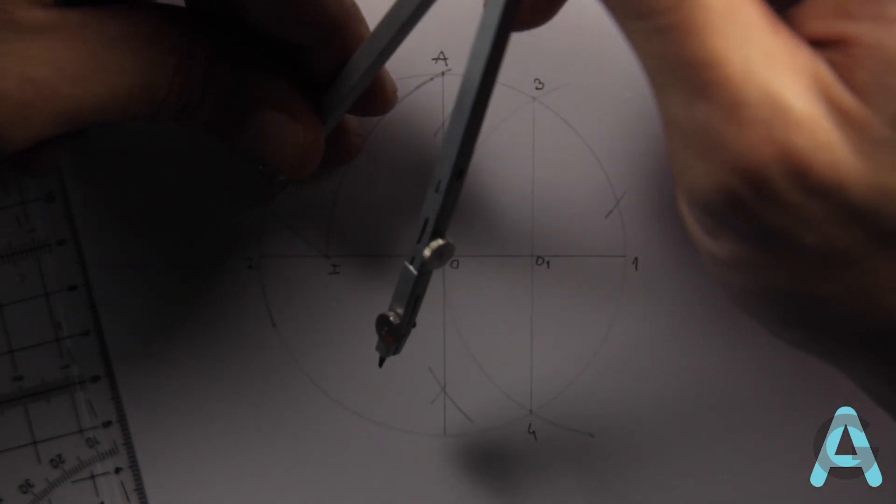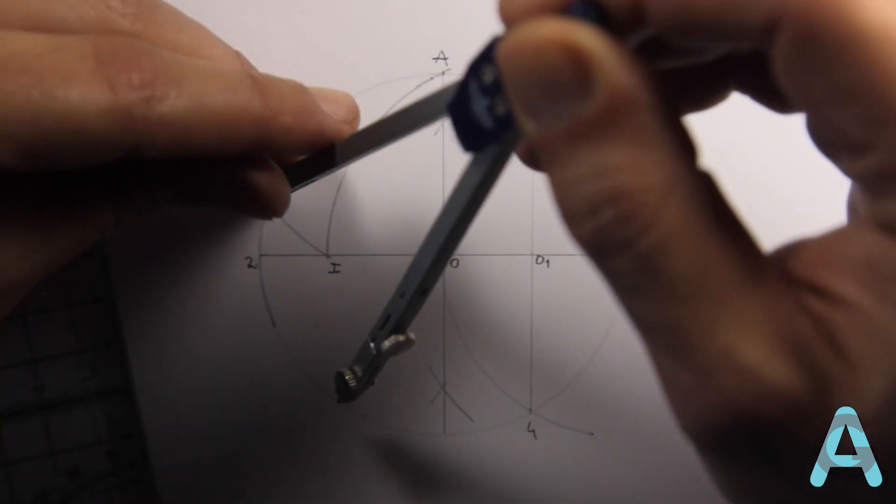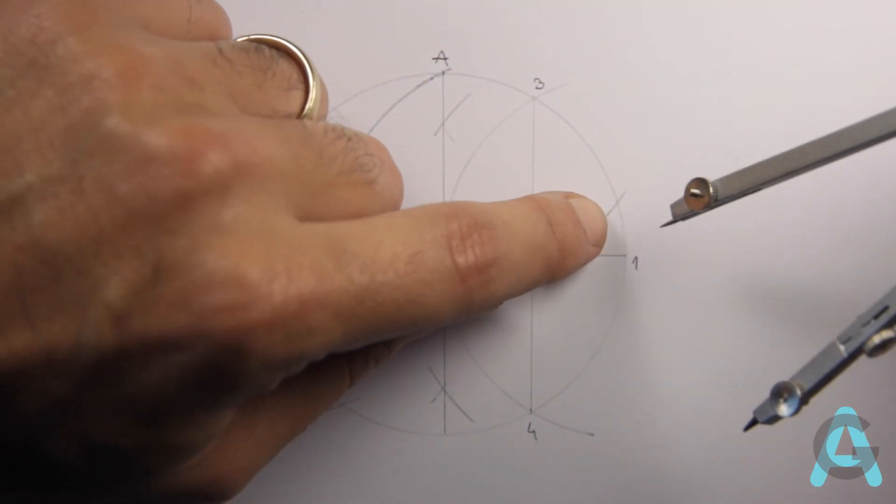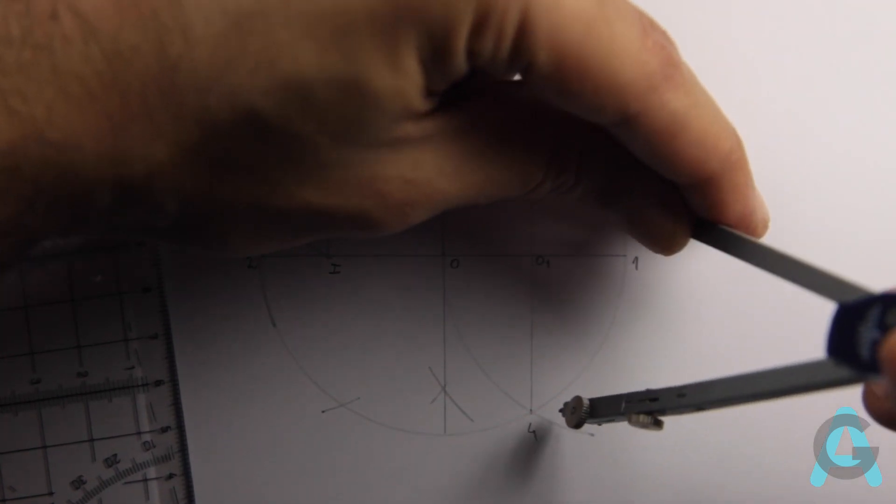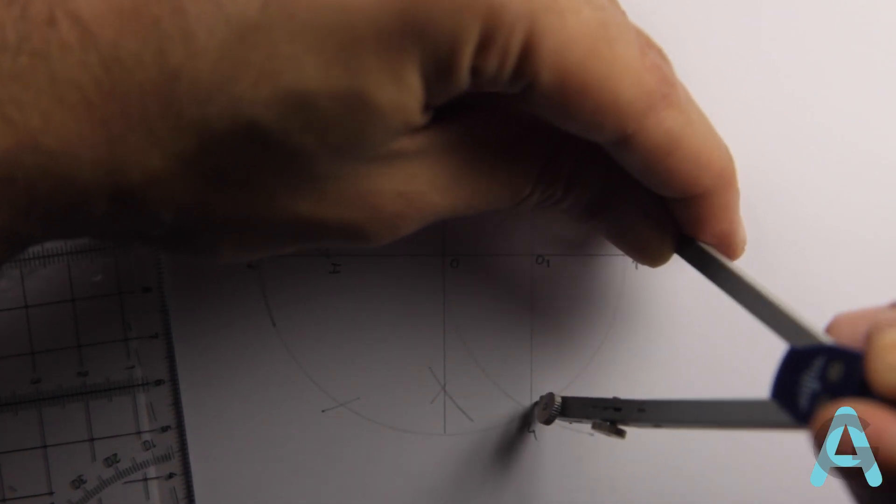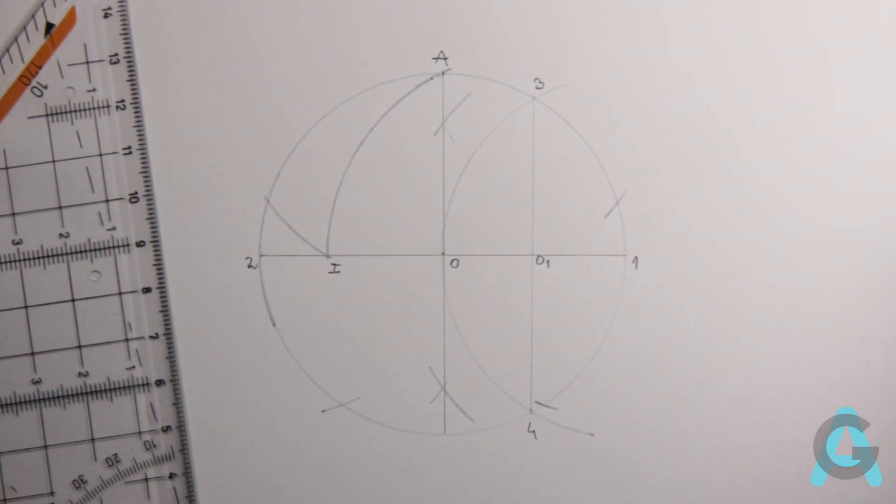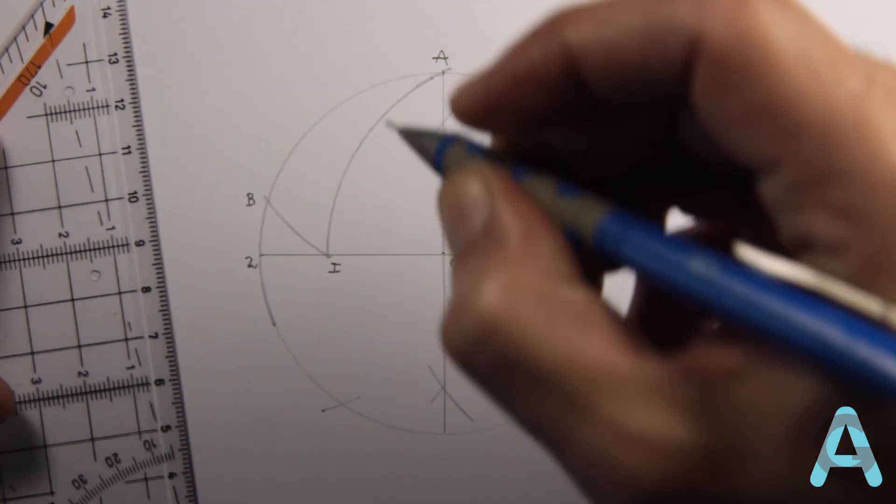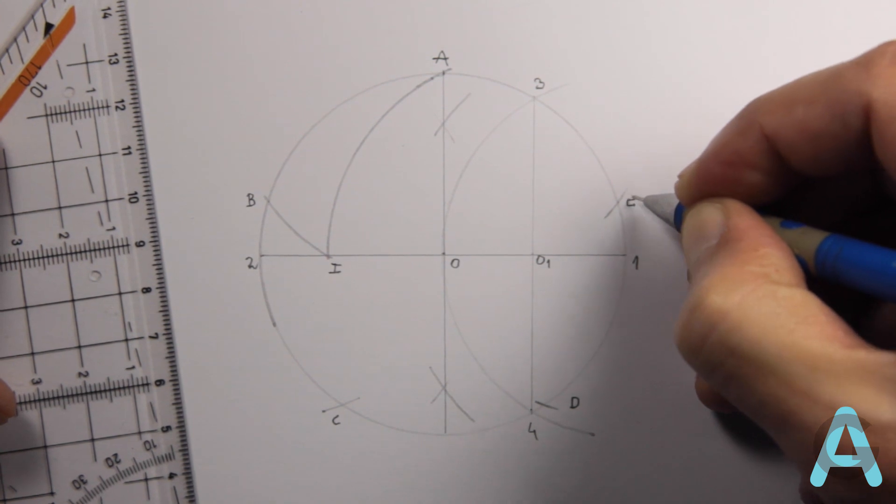Then we'll move the needle to the previously marked point and trace another point. And then we'll do the same in the opposite side. And we've just determined the five points of the pentagon. Let's name them B, C, D, E.